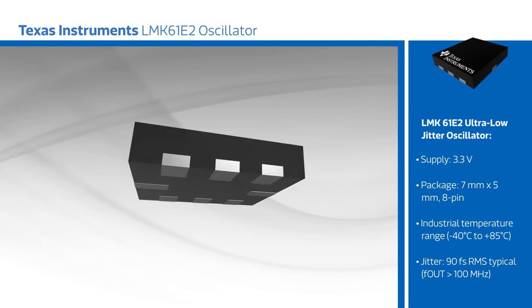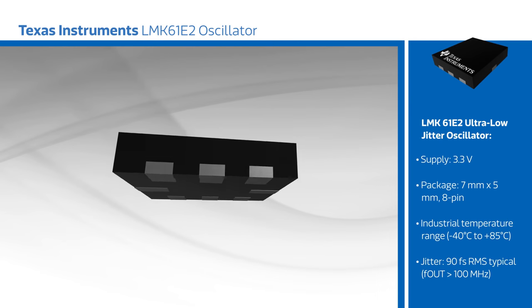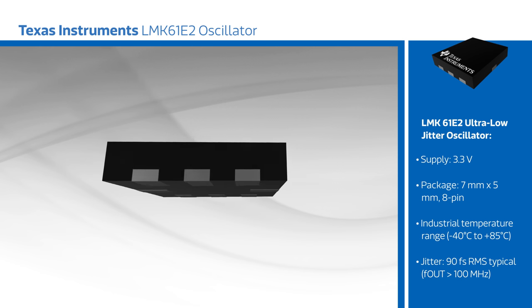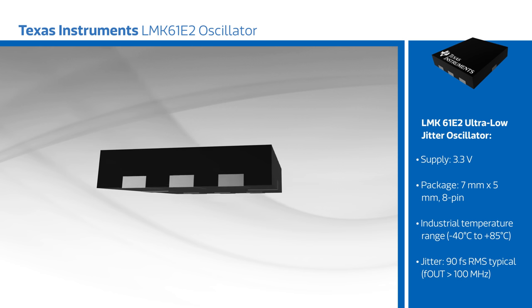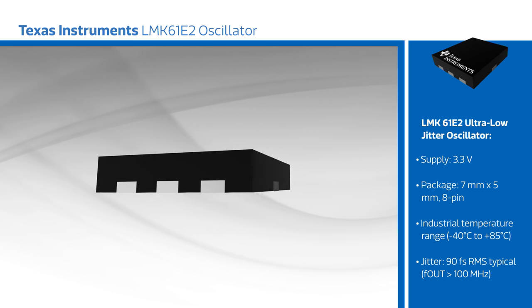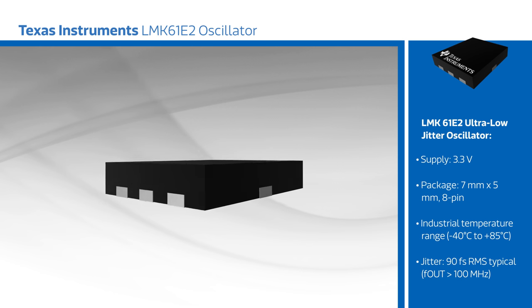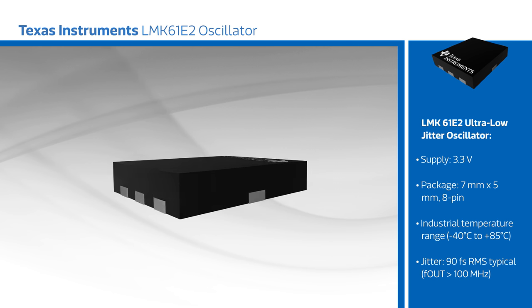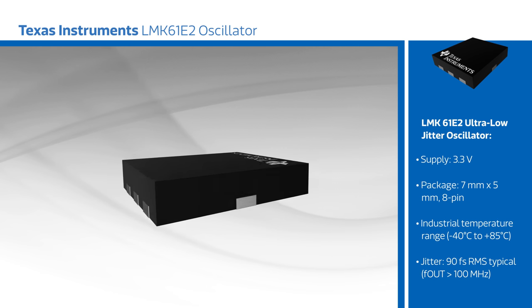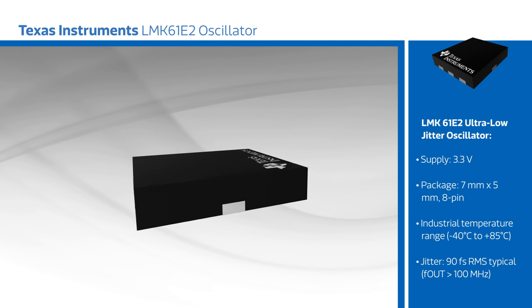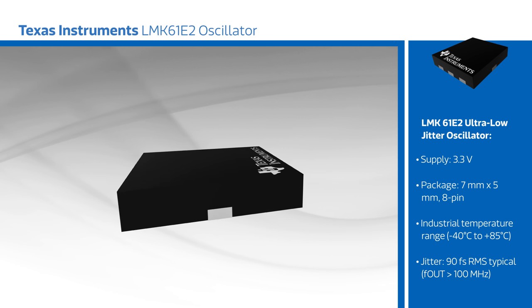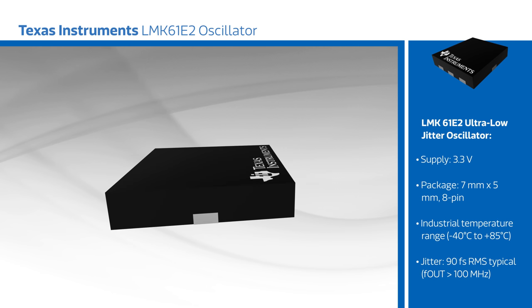The LMK61E2 achieves 90 femtosecond RMS typical jitter with output frequencies greater than 100 MHz, and uses separate integrated LDOs for analog and digital circuitry that isolate the PLL from external power supply noise.